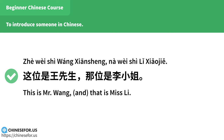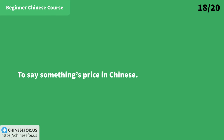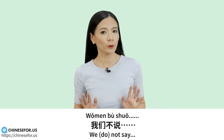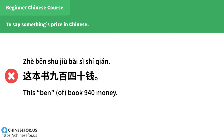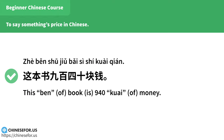To say something's price in Chinese: 我们不说「这本书九百四十钱」，我们说「这本书九百四十块钱」。